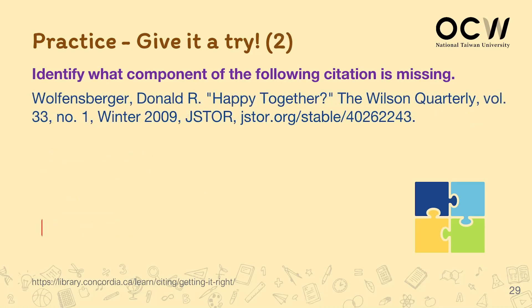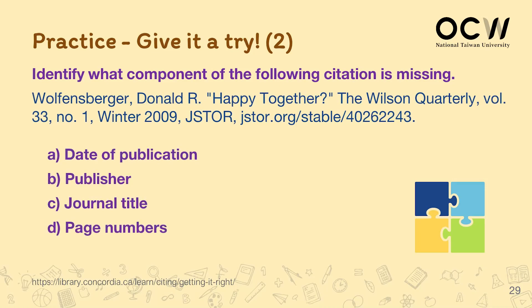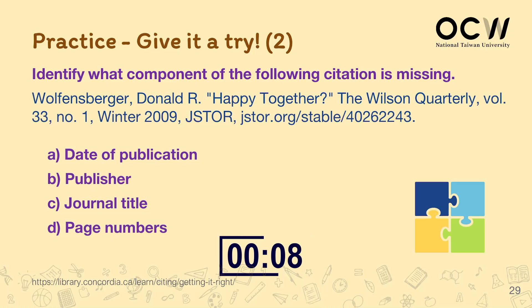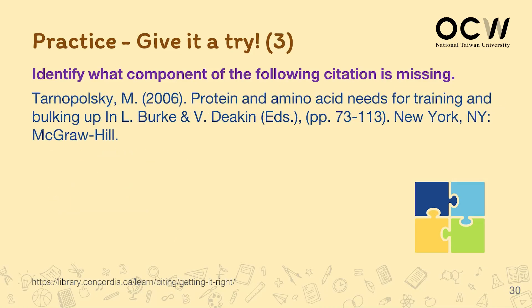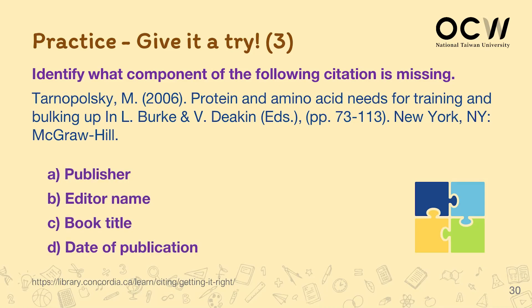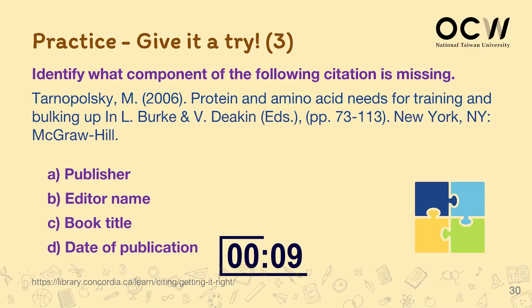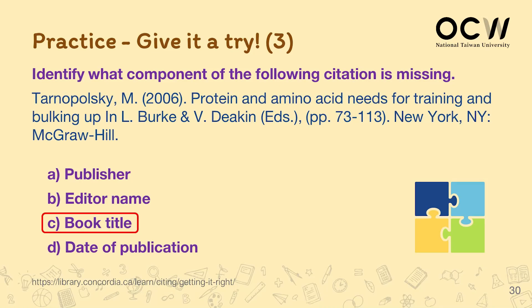Next, look at the citation — which one of the following is missing: the date of publication, the publisher, the journal title, or the page number? Excellent! It is the page number that is missing. Now look at the following citation — is it the publisher, the editor name, the book title, or the date of publication that is missing? Outstanding! It is indeed the book title that is missing.